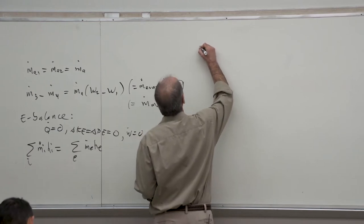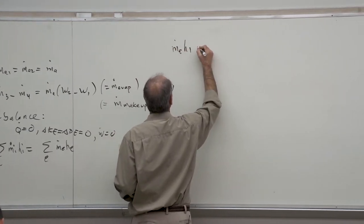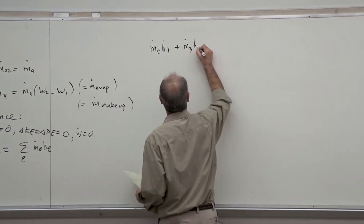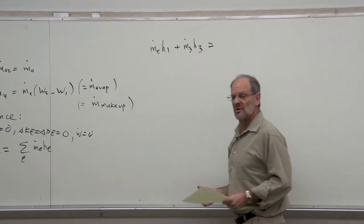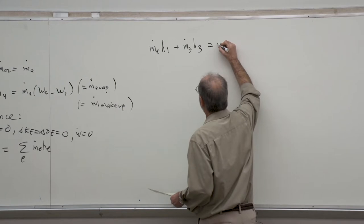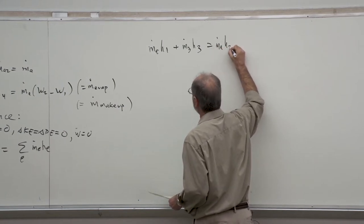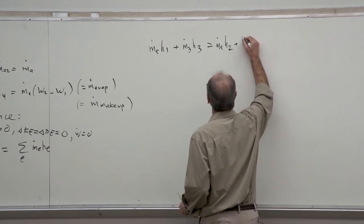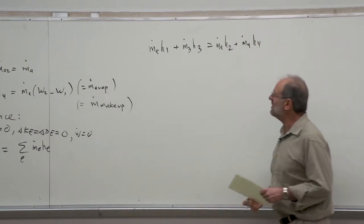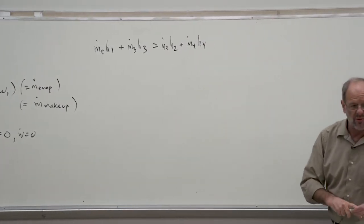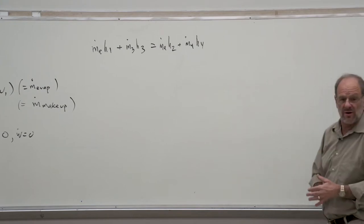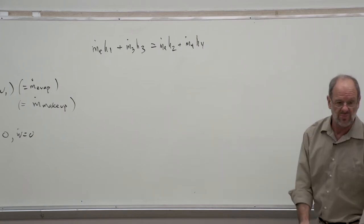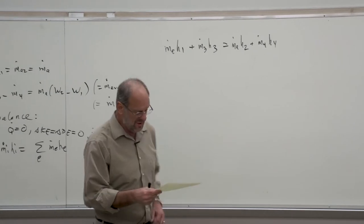Now it's just a matter of realizing there are two streams going in and two streams going out. So we would have our dry air stream M-dot-A times H1, then water coming in at point 3: M-dot-3 times H3. This has to equal what goes out: M-dot-A times H2 for the air, plus M-dot-4 times H4 for the water. Note that even though the dry air mass flow rate is the same going both in and out, the water flow rate certainly is not — M-dot-3 has to be greater than M-dot-4 because evaporation is taking place as we go from 3 to 4.